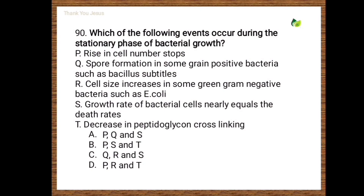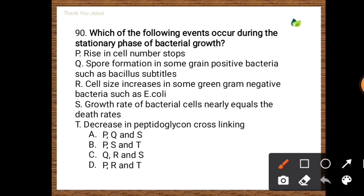Next question: Which of the following events occur during the stationary phase of bacterial growth? Statements: P — rise in cell number stops; Q — spore formation in some gram-positive bacteria such as Bacillus subtilis; R — cell size increases in some gram-negative bacteria such as E. coli; S — growth rate of bacterial cells nearly equals death rate; T — decrease in peptidoglycan cross-linking. The correct options are P, Q, and S.